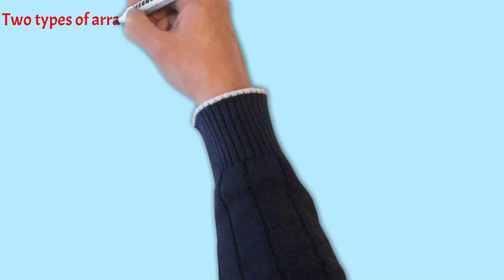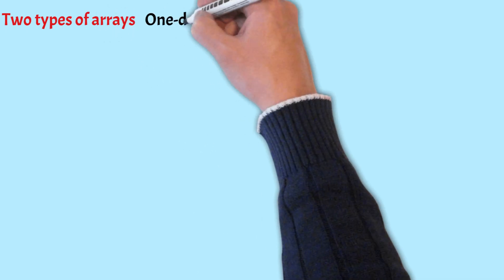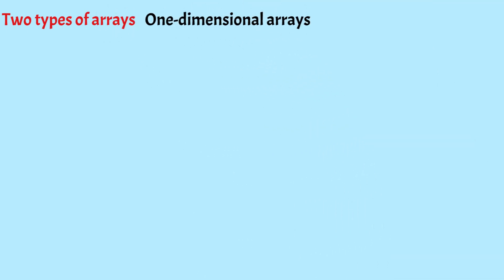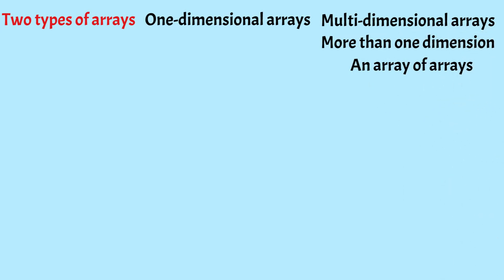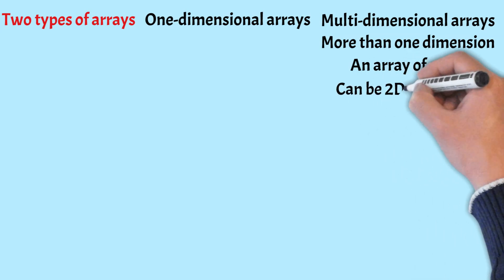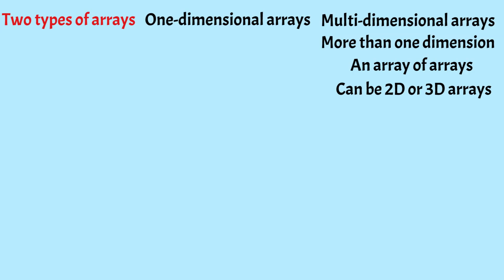There are two types of arrays in Java: 1-dimensional arrays, which we have just discussed, and multi-dimensional arrays. A multi-dimensional array is an array that has more than one dimension — it is an array of arrays, having multiple levels or dimensions. Multi-dimensional arrays can be 2D or 3D arrays.